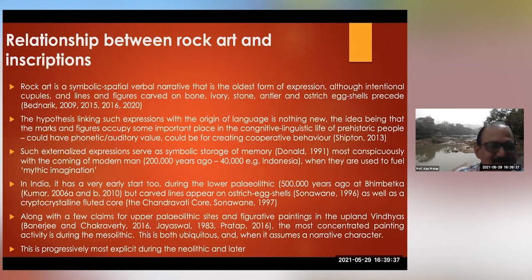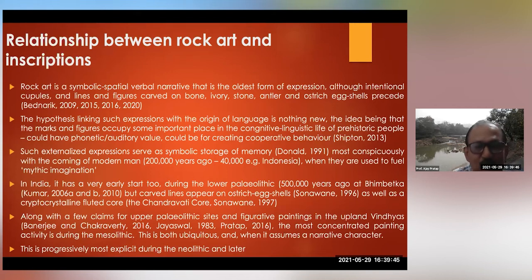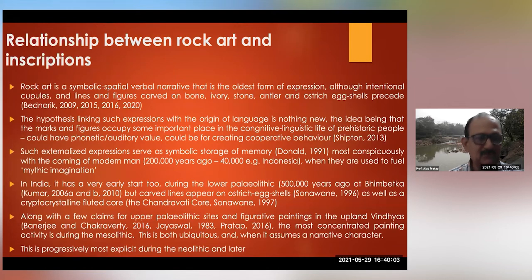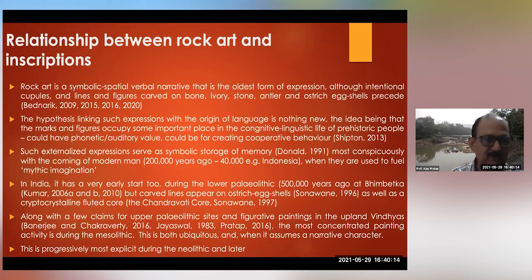In India, this has a very early start during the lower Paleolithic — the age of cupules, I suppose, at Bhimbetka, where Dr. Girraj Kumar's work is absolutely stunning. Top lines appear on ostrich eggshells as discussed by Professor Swanavane, and at Chandravati Pur — these are examples of early art involving gouging on external media. In the Vindhyan region, if we look at the density of population in a particular area, that is fairly well reflected in the density of paintings — because painting activity is a very social activity.